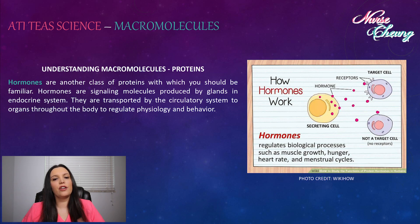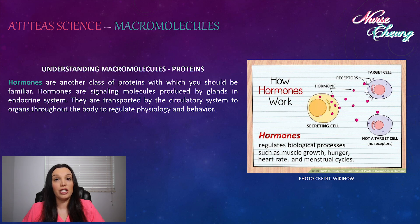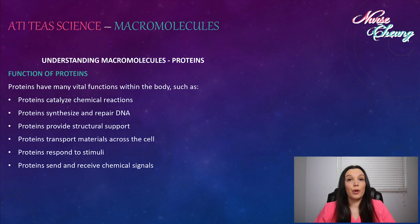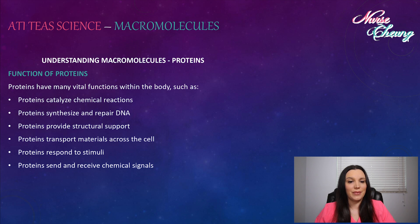Hormones are another class of proteins with which you should be familiar. Hormones are signaling molecules produced by glands in the endocrine system. They are transported by the circulatory system to organs throughout the body to regulate physiology and behavior. Proteins have many vital functions within the body, such as catalyzing chemical reactions, synthesizing and repairing DNA, providing structural support, transporting materials across the cell, responding to stimuli, and sending and receiving chemical signals.